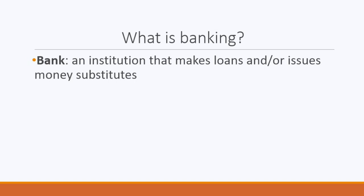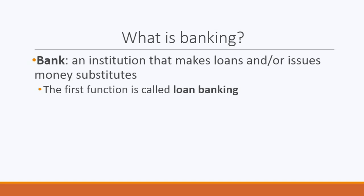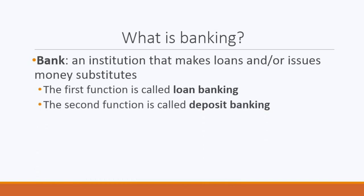So a bank is an institution that makes loans and/or issues money substitutes. This relates to two banking functions. The first — making loans — is called loan banking. As we'll see, loan banking does not involve any change in the money supply; it simply involves a transfer of savings from one individual to another. The second function is deposit banking — the issuance of money substitutes. People prefer money substitutes to money proper because they are much easier to carry, more secure. If your wallet gets stolen, you can just cancel your debit card.